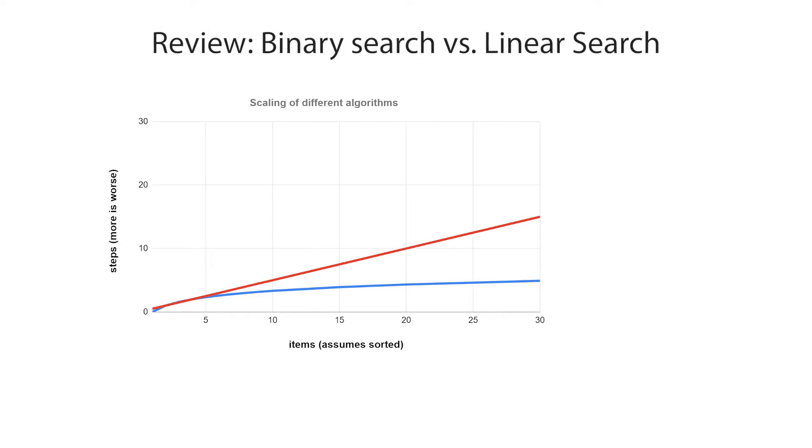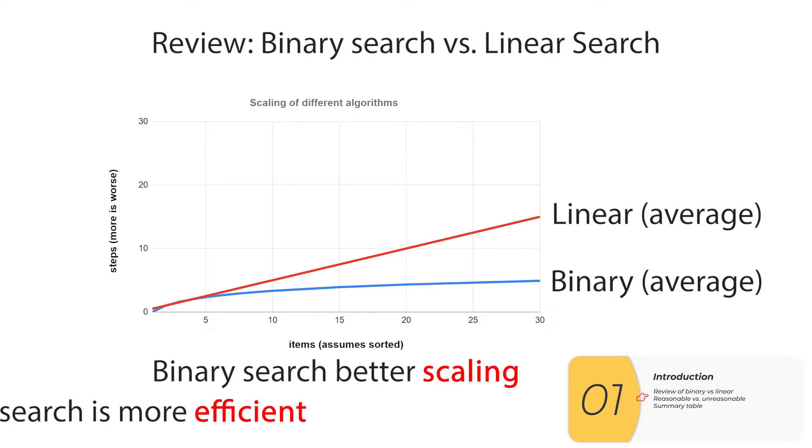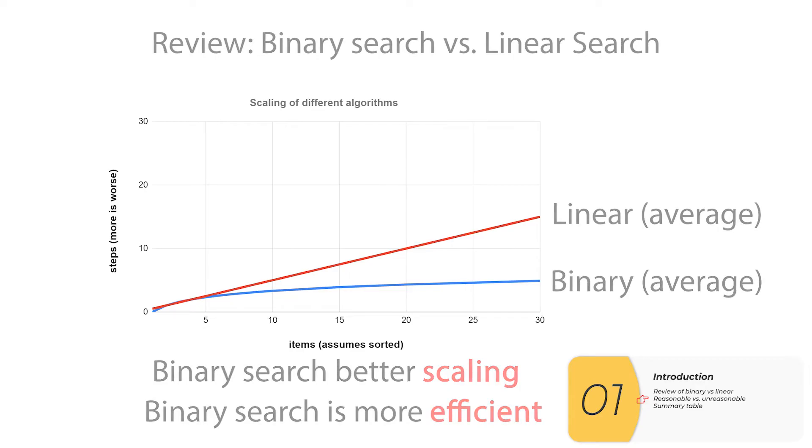Previously, we had looked at binary search and linear search. So I have this chart here. As I go to the right, that's more items. As I go up, that's more time. The red is linear search, the blue is binary search. And what we saw is if you're just searching through a few number of items, they perform kind of the same. But if you're searching through a lot of items, the binary performs better. So then we say the binary search has better scaling, means it works better when you get to large numbers. Scaling is an AP CSP vocab word. We also say that binary search is a more efficient algorithm. It's doing the same thing as linear, but just doing it better. And again, efficient is an AP CSP vocab word.